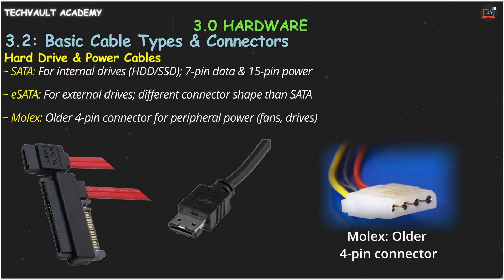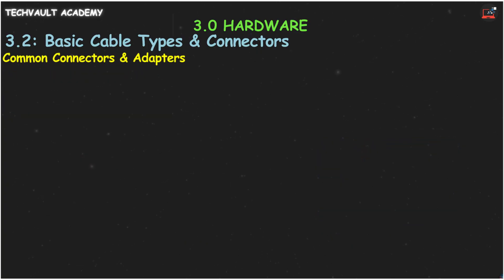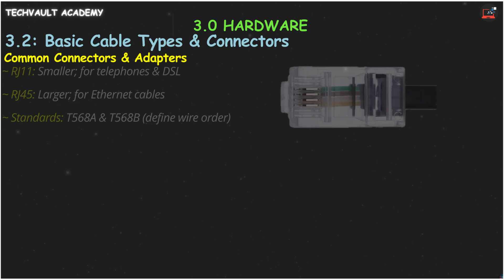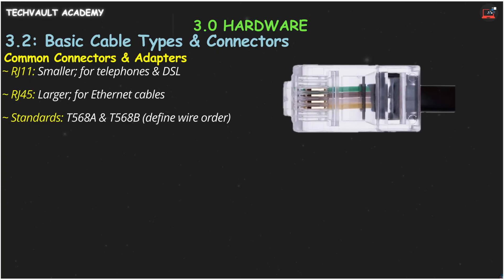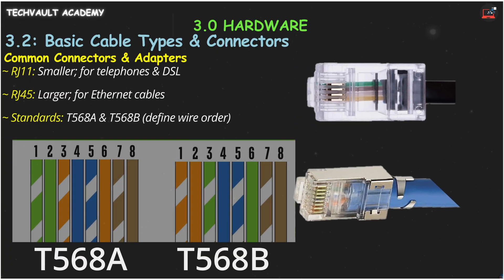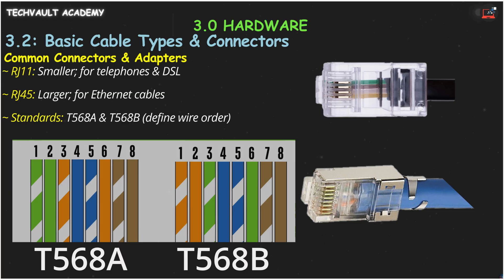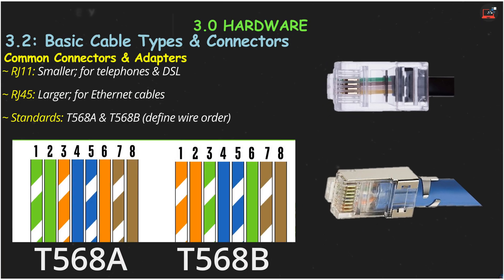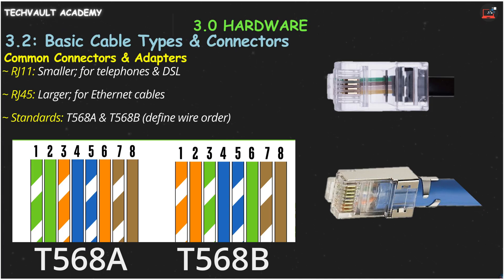Let's quickly identify some key connectors. RJ11 is your smaller telephone and DSL connector. RJ45 is the larger 8-pin connector for Ethernet. It's crucial to know the T568A and T568B wiring standards to ensure cables are made correctly. T568B is most common in the US.